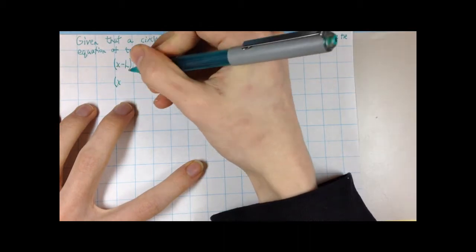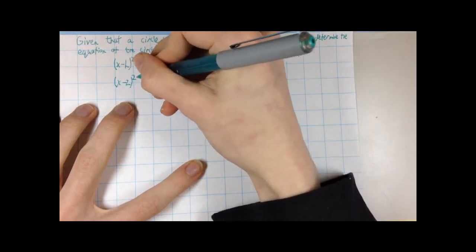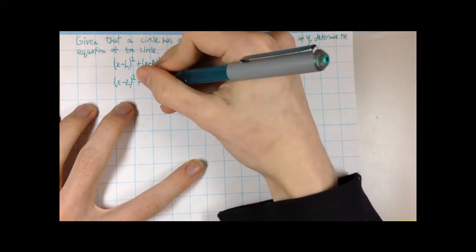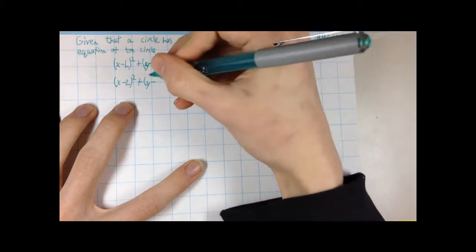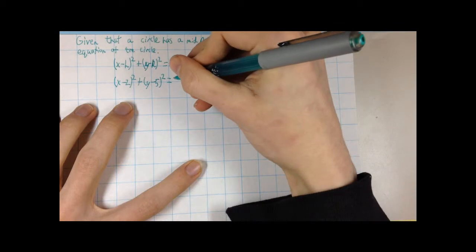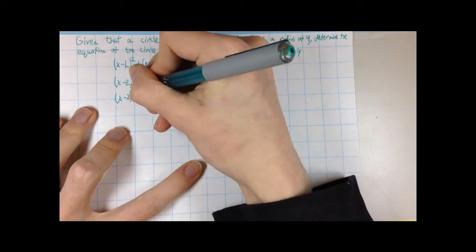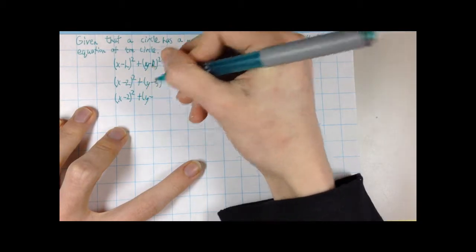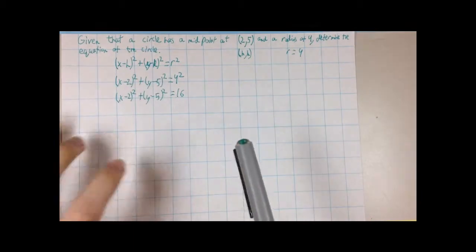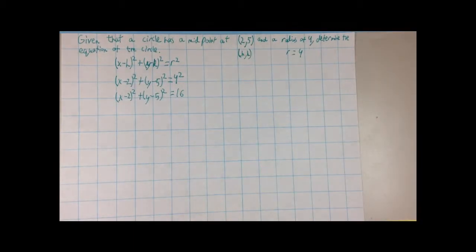x minus 2 squared plus y minus 5 squared equals 4 squared. And that is how we found the equation for this circle given a midpoint and a radius.